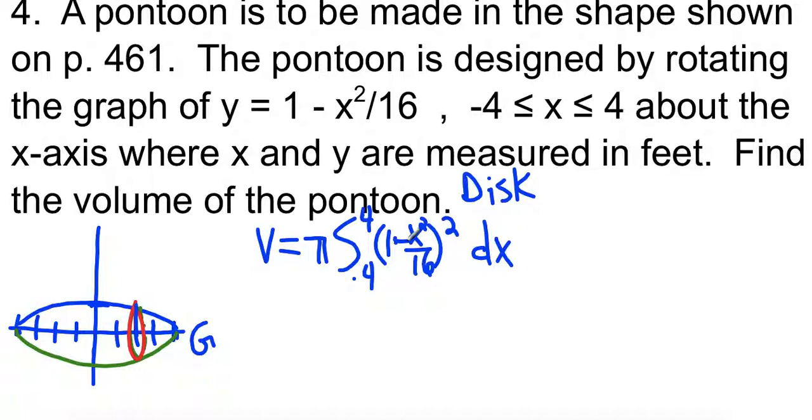Now, one thing I want to show you is notice this thing is symmetrical. So if you didn't want to evaluate from negative 4 to 4, you could actually evaluate from 0 to 4 and then double your answer. That just might make our problem a little bit easier. You don't have to do that, but it's just an option.